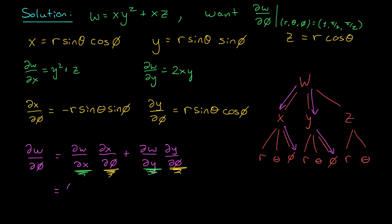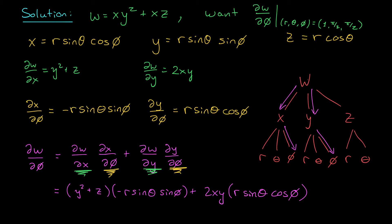Plugging these in, we get: partial w by partial phi equals y squared plus z times minus r sine theta sine phi, plus 2xy times r sine theta cos phi. Now, if we had just been asked for the partial derivative of w with respect to phi, our final step would be to replace x, y, and z using the spherical coordinate expressions, since our final answer would have to be in terms of r, theta, and phi. But in this case, we're actually being asked to evaluate our derivative at a particular point.